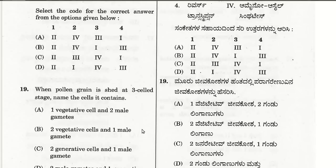The nineteenth question: when pollen is shed at three-cell stage, the cells it contains are one vegetative cell and two male gametes. That is the right choice.